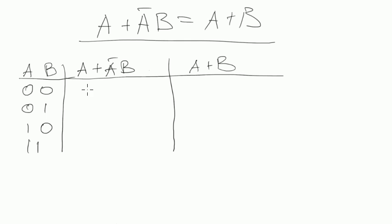So, if a, b, 0, 0, then the whole thing will be 0, plus 0 negated is 1, multiplied by 0 is the whole thing is 0. Then again, 0 plus a negated is 1, b is 1, then the whole thing equals 1. Next one, 1 plus 1 negated is 0, multiplied by b is 0, equals 1. And the last one, 1 plus 1 negated is 0, plus b is 1, then the whole thing is 1 again.